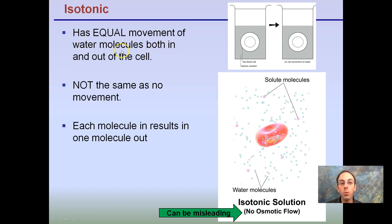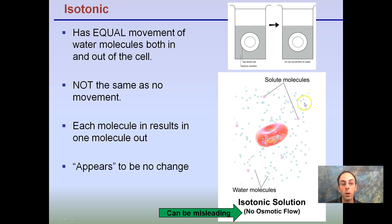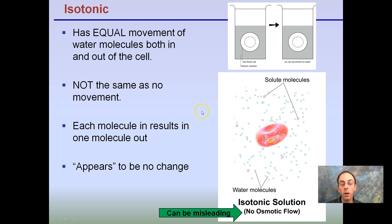Isotonic has an equal movement of water molecules, both in and out of the cell. This is not the same as no movement. The solute molecules are the same on the inside and the outside, and water is coming in and out at the same rate — each molecule in results in one molecule out of the cell, so there appears to be no change. The label 'no osmotic flow' can be misleading; most people think nothing will move, but that's not the case. Water can be coming in, but for every molecule that comes in, one comes out, and vice versa. So this is where you get equal movement, not no movement, but equal movement.